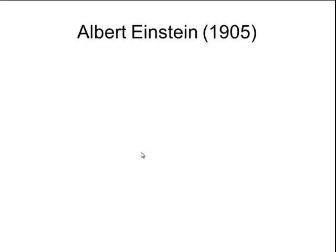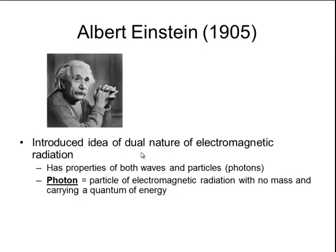Five years later, Albert Einstein introduced the idea of the dual nature of electromagnetic radiation. He proposed that not only was electromagnetic radiation wave-like, but it was also particle-like, and that it had dual properties, so it had properties of both waves and particles. And he named these particles photons. So a photon is a particle of electromagnetic radiation that has no mass, but carries a very specific quantum of energy.